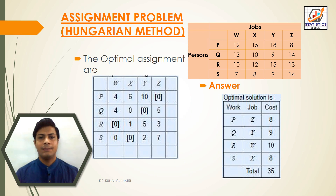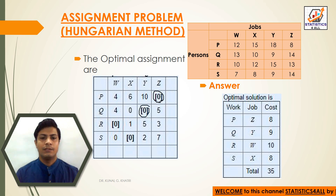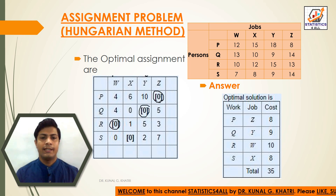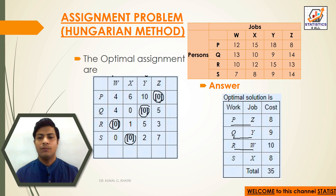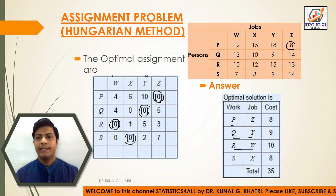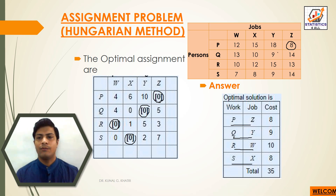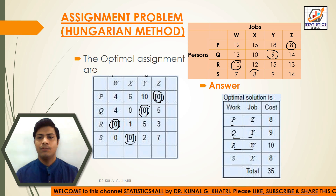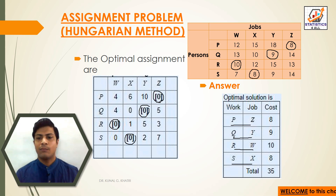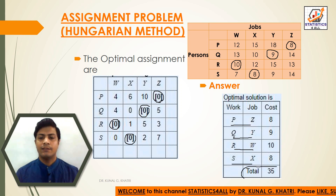The optimal assignments found are: P→Z, Q→Y, R→W, and S→X. The corresponding values are: P→Z = 8, Q→Y = 9, R→W = 10, S→X = 8. The total minimum cost is 8 + 9 + 10 + 8 = 35.